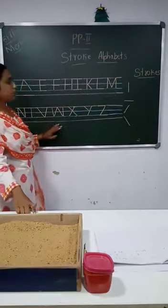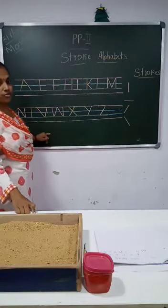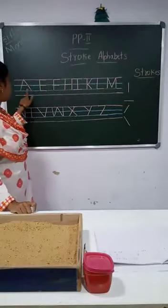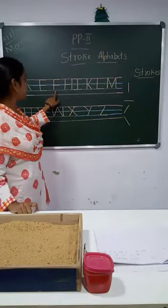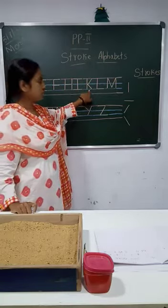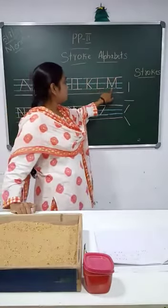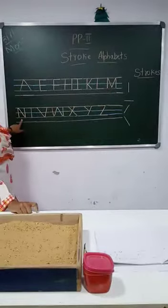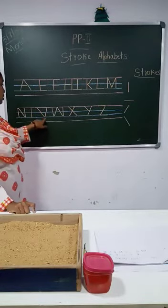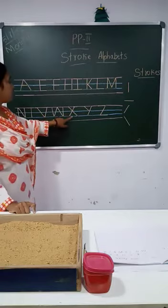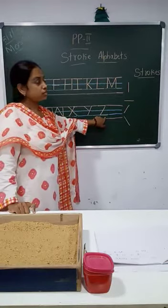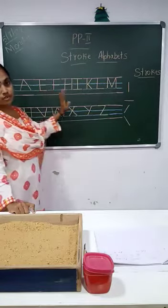So these are the stroke alphabets we have learnt: letter A, letter E, letter F, letter H, letter I, letter K, letter L, letter M, letter T, letter V, letter W, letter X, letter Y, letter Z.